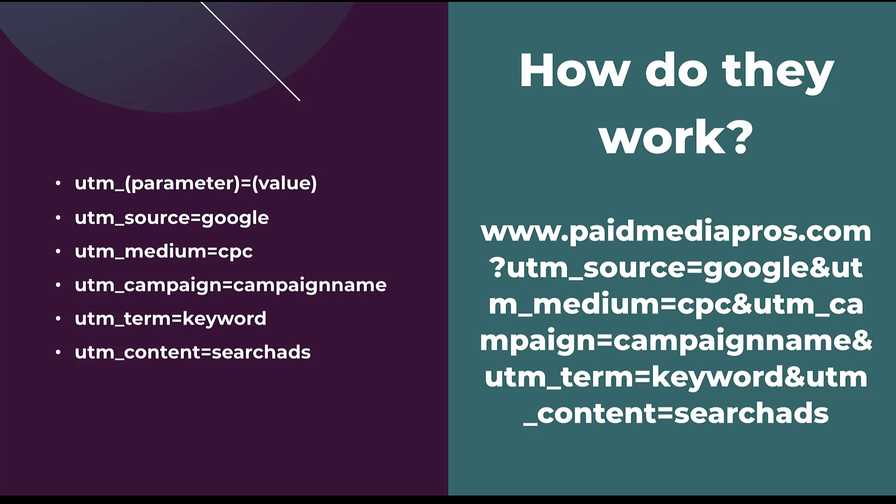So in these examples, the parameter is going to be source, medium, campaign, term, and content. And the value assigned to them is going to be Google, CPC, campaign name, keyword, and search ads.